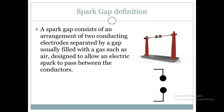So when you denote the spark gap in a circuit, you simply denote the shape. This is shown in black color — you can denote it in the circuit.